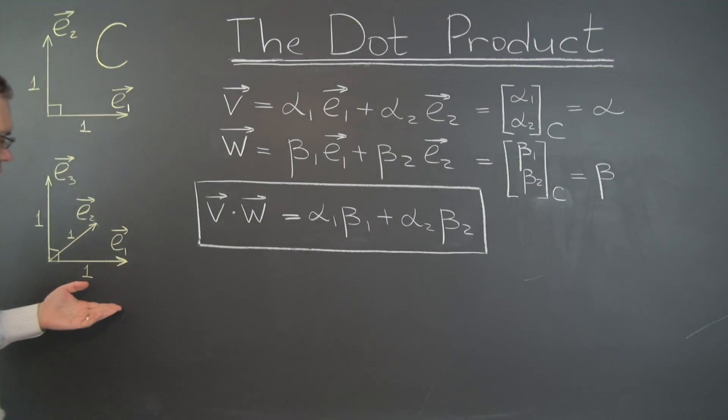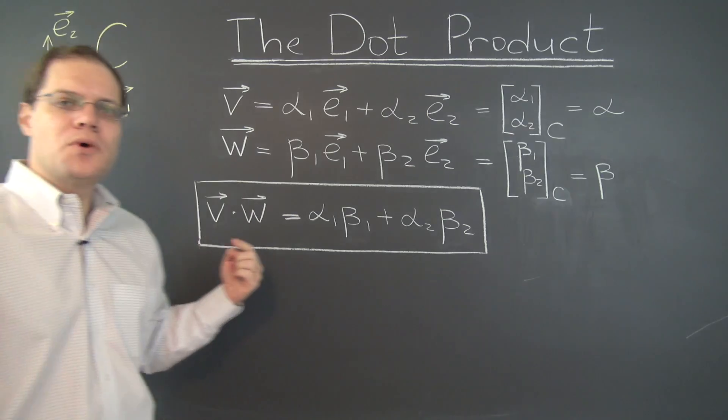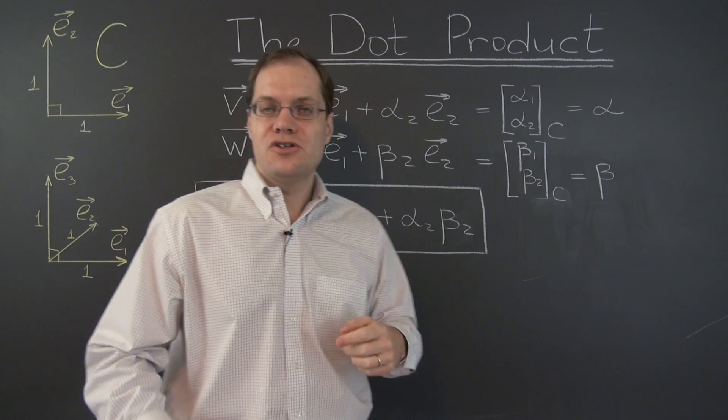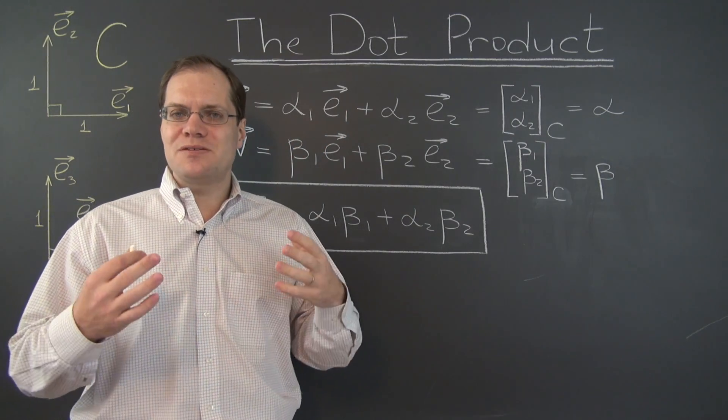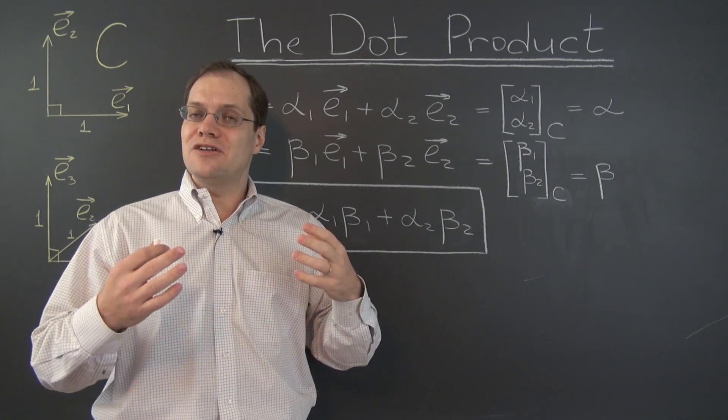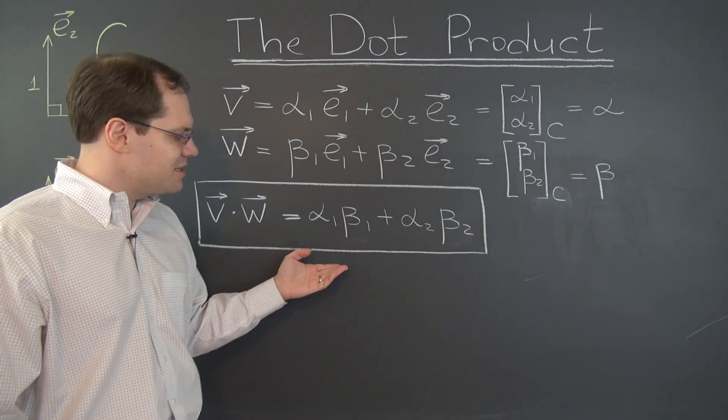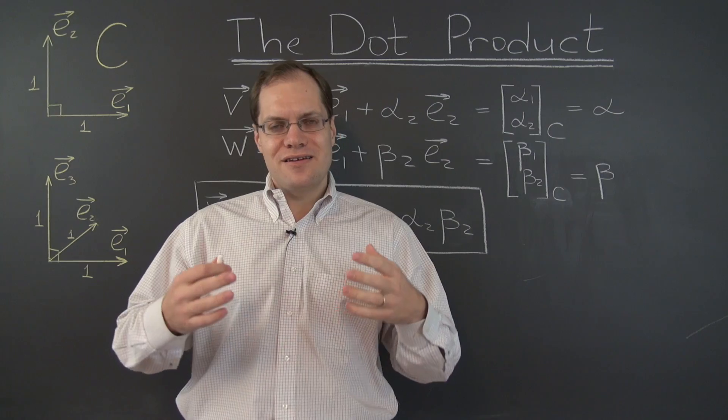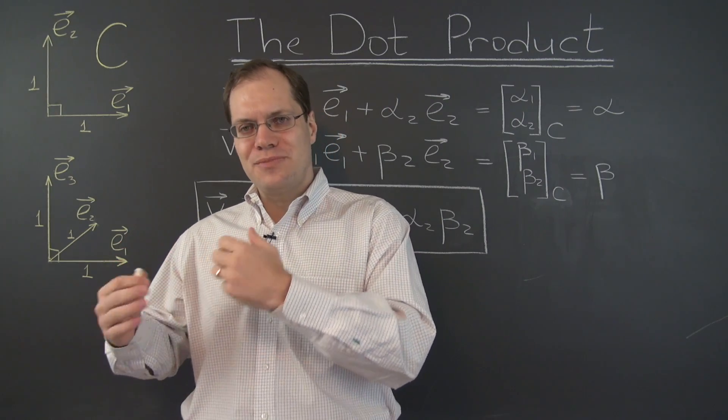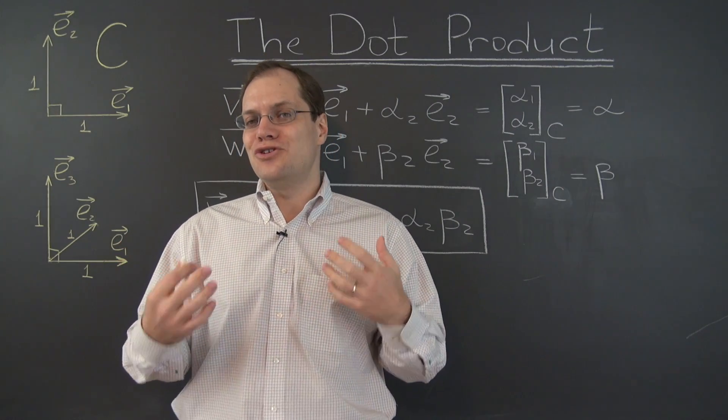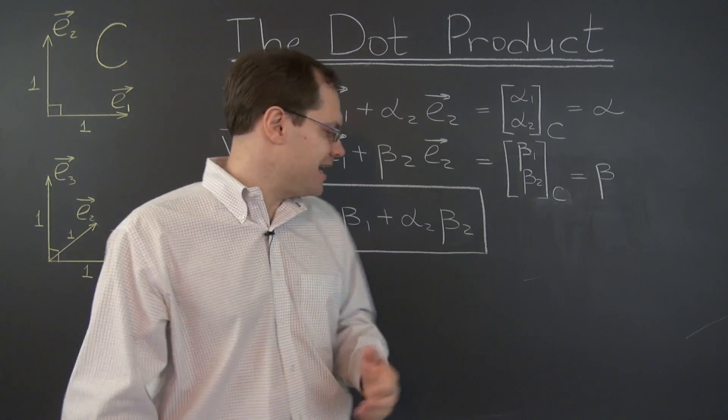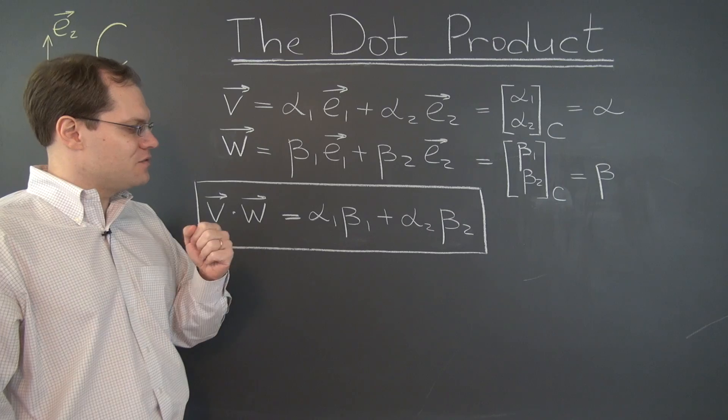And it's pretty clear what would happen in three dimensions, we would have an additional term alpha3 beta3. So this is probably the simplest possible expression that it could be. And the simplicity of this expression really sheds some light on why the dot product as we define it geometrically is actually so useful. I think the usefulness of that concept goes hand in hand with the simplicity of this formula.